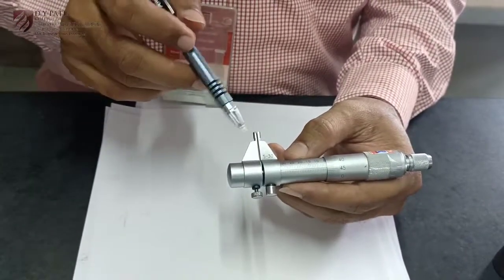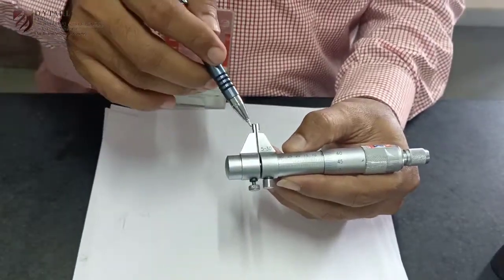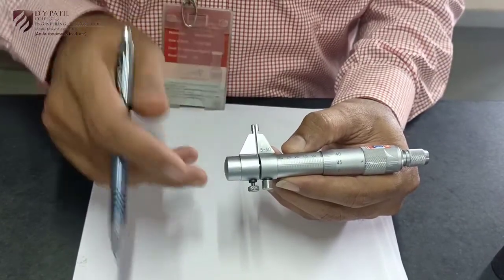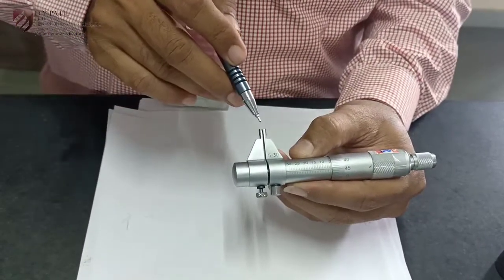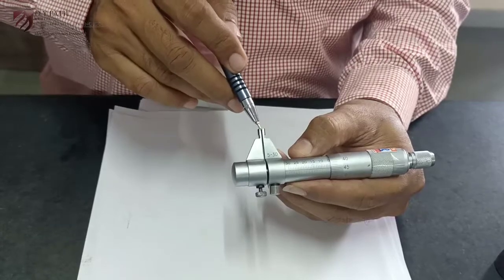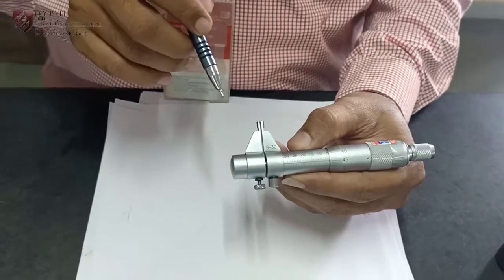Here instead of jaws, the jaws are provided so that they can be used for measurement of internal dimensions. They have projections like this and a small pin shape structure is provided at the top, so we can use it for measurement of inside dimension.